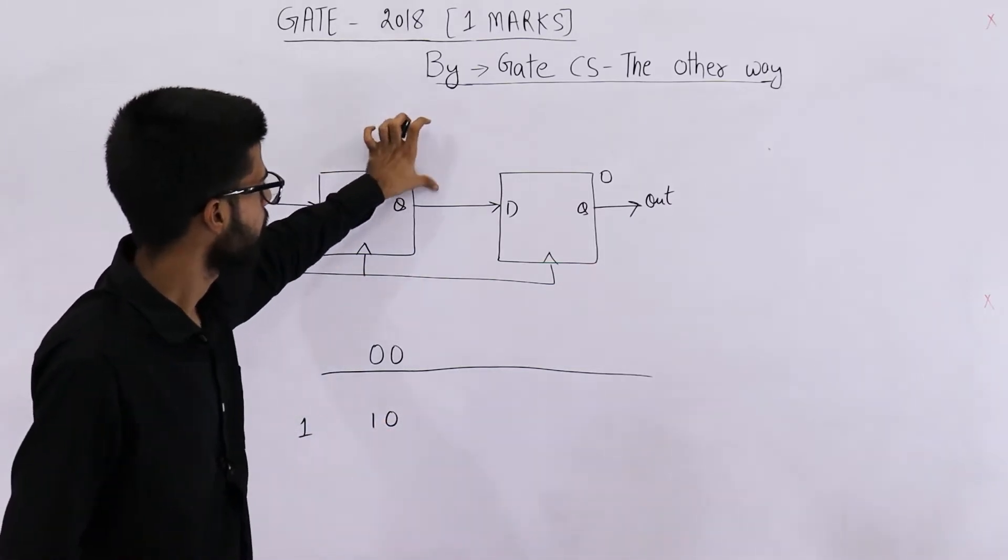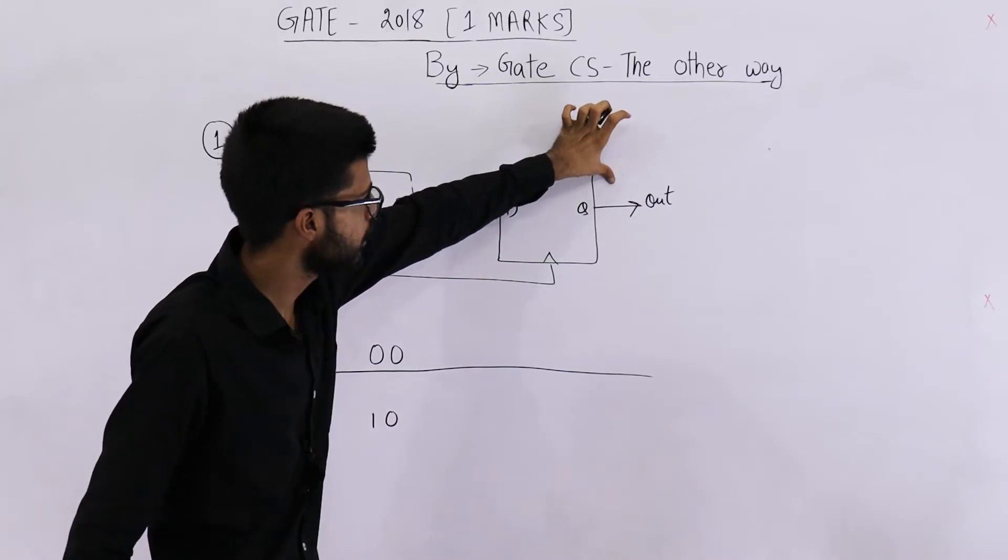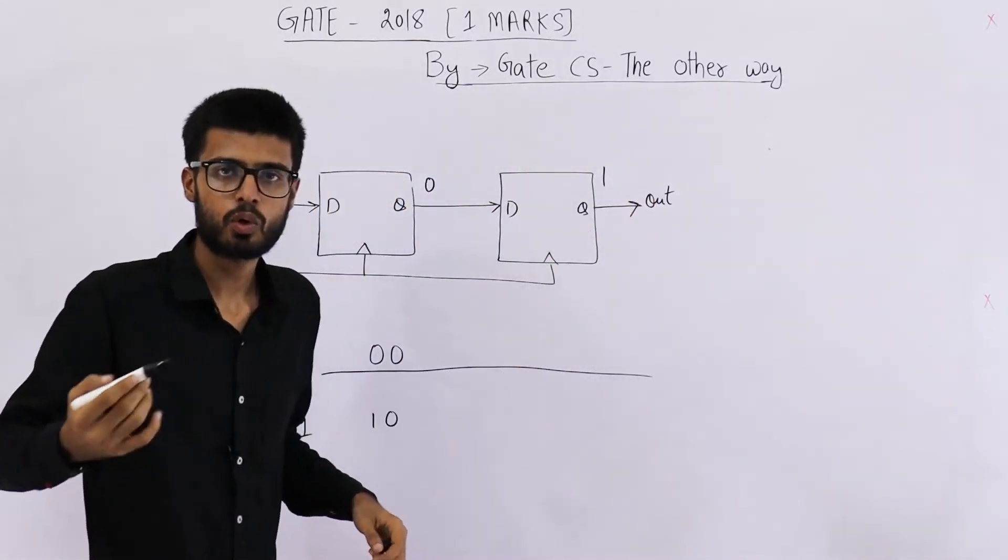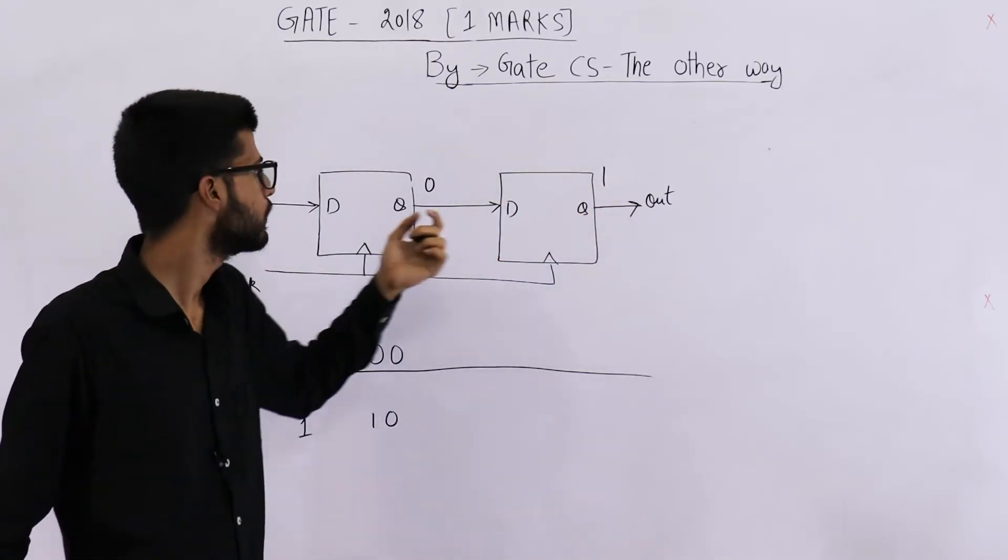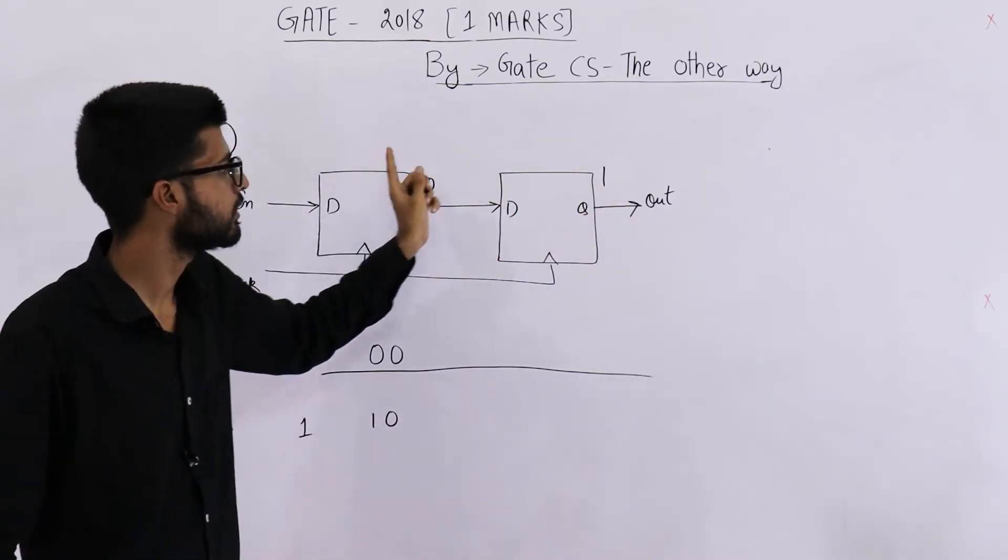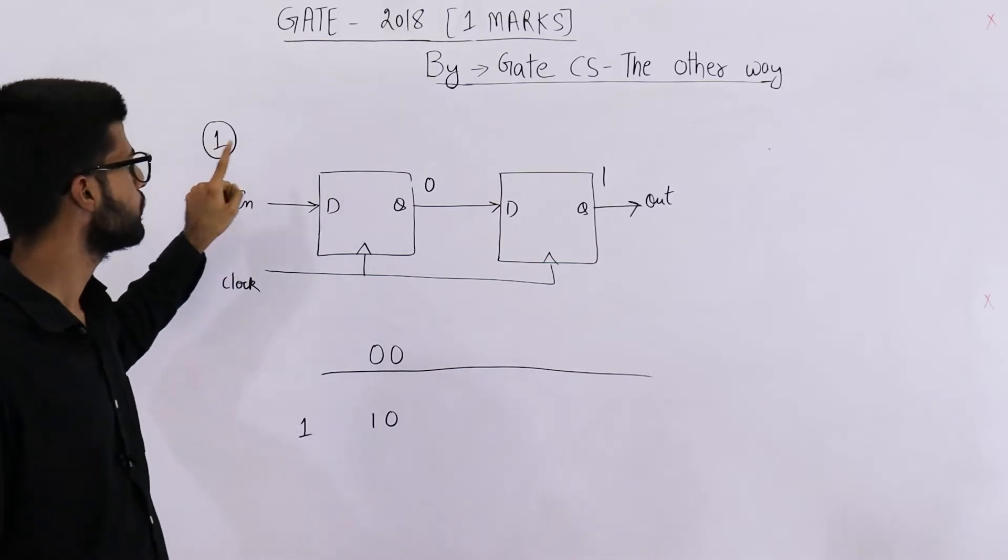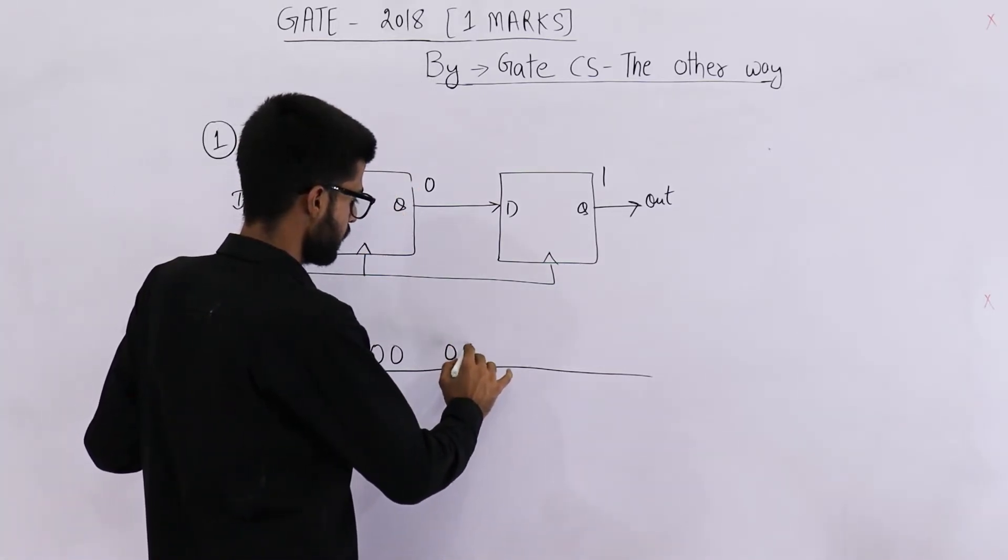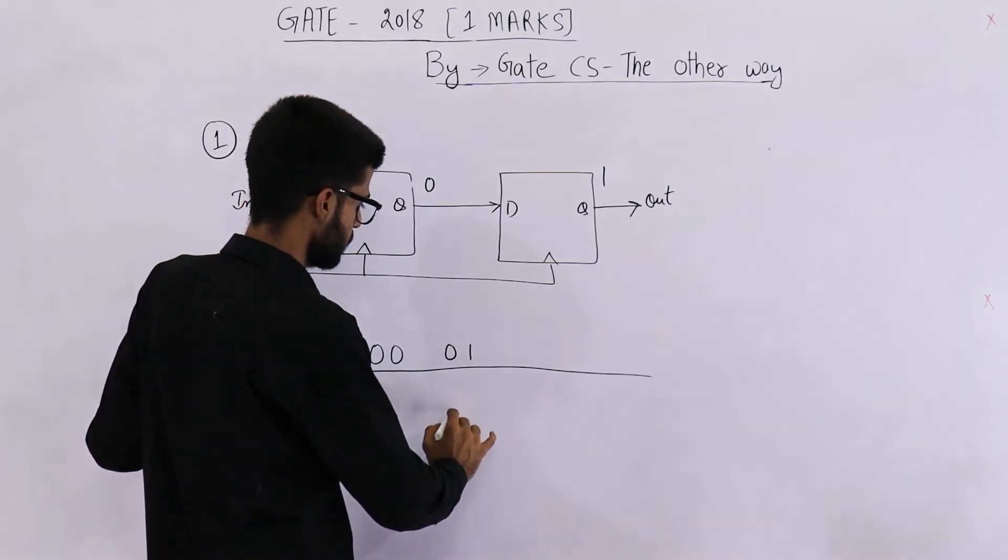What will happen when these values are 0, 1? When the state is 0, 1, what is going to happen? See, this one will be discarded. This one will come here and this 0 will go there. So the state will be 1, 0. In case of 0, 1, the state will be 1, 0.